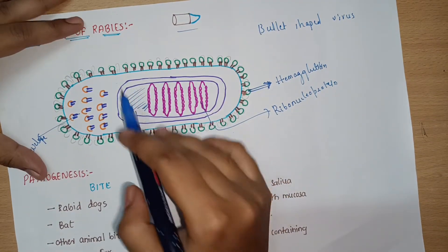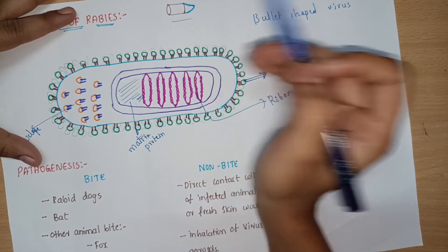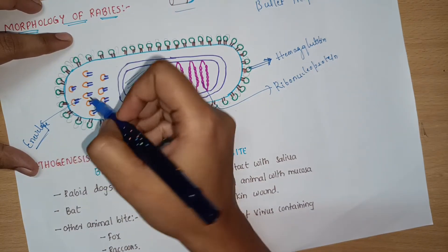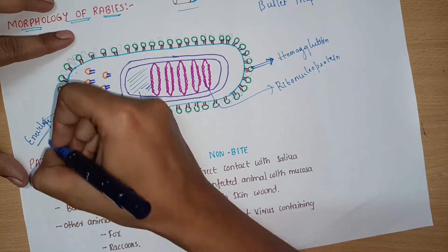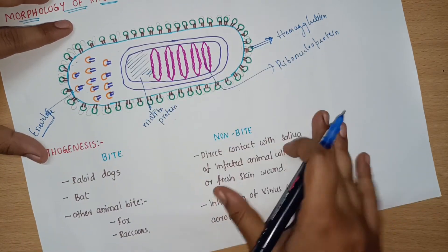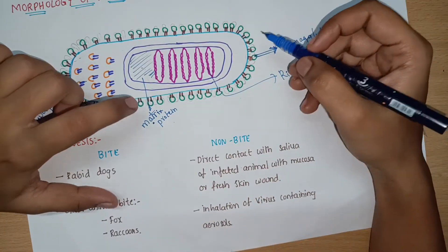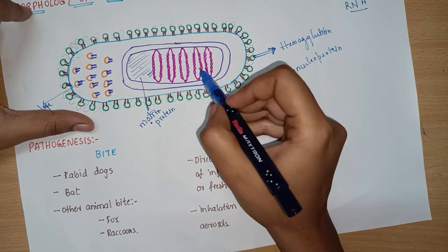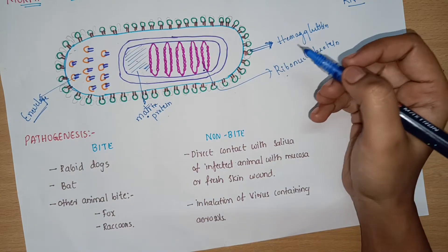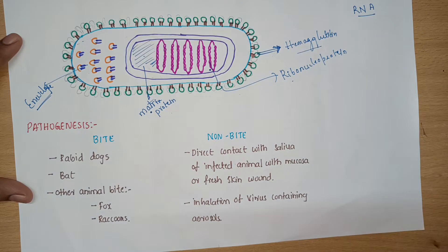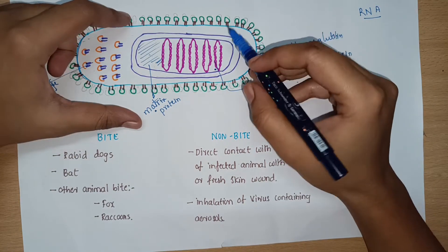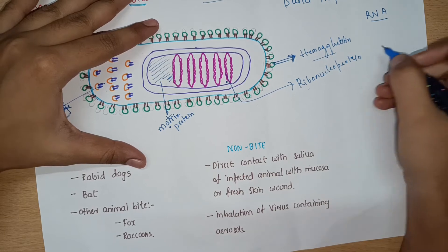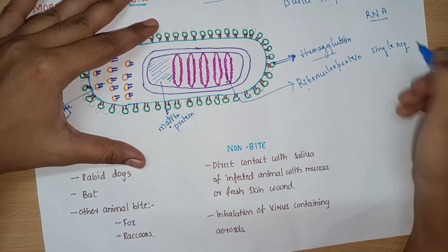Now let us look into the morphology of the rabies virus. Basically, rabies virus is a bullet-shaped virus. It has an envelope or membrane, and inside the envelope is the matrix protein portion. Rabies virus is an RNA virus and contains ribonucleoprotein. Outside the envelope is the hemagglutinin. The nucleocapsid contains single-stranded negative-sense RNA, nucleoprotein, and polymerase proteins.